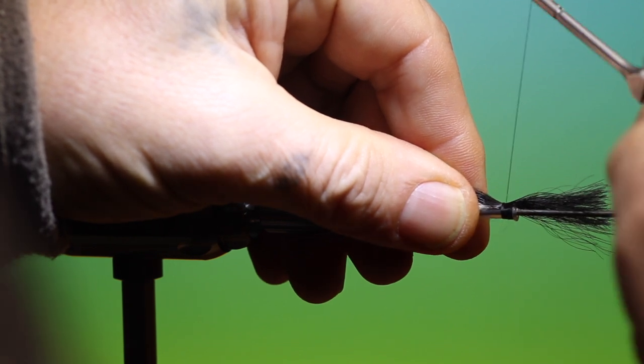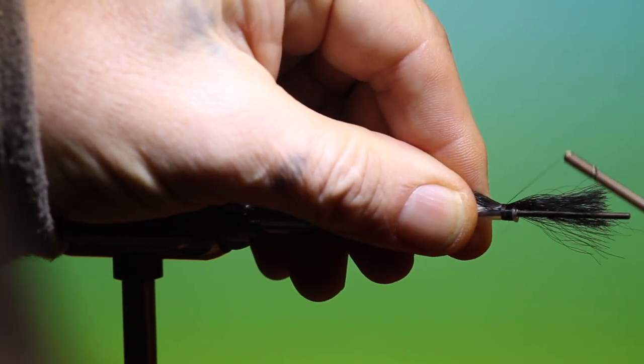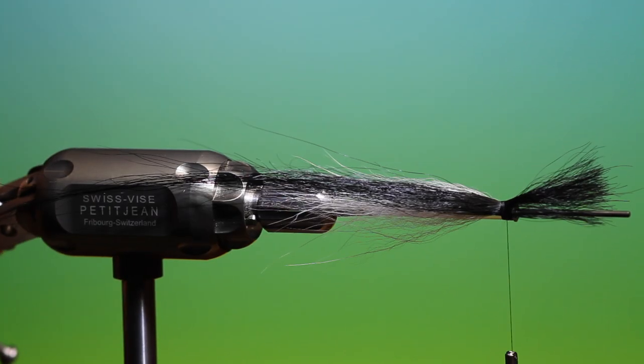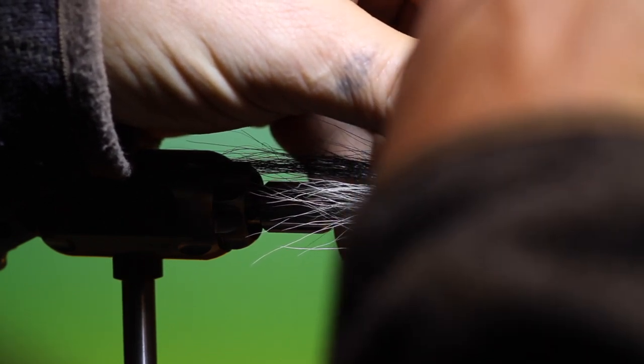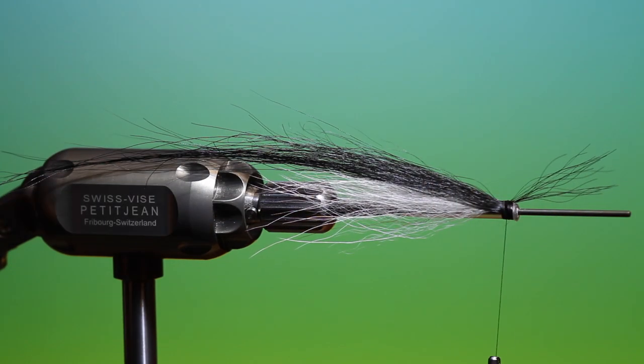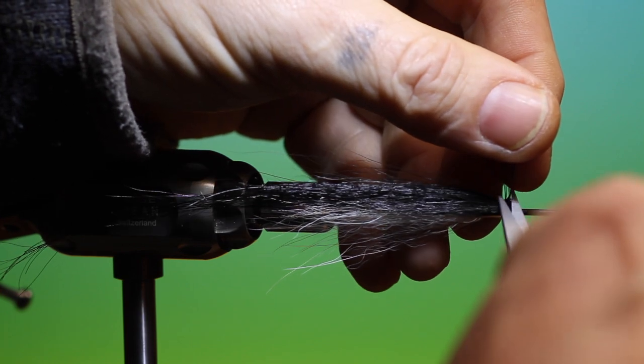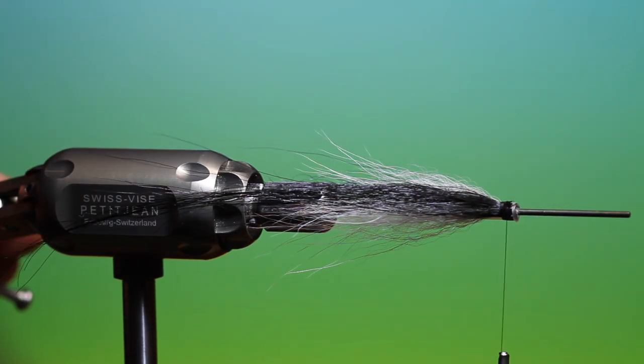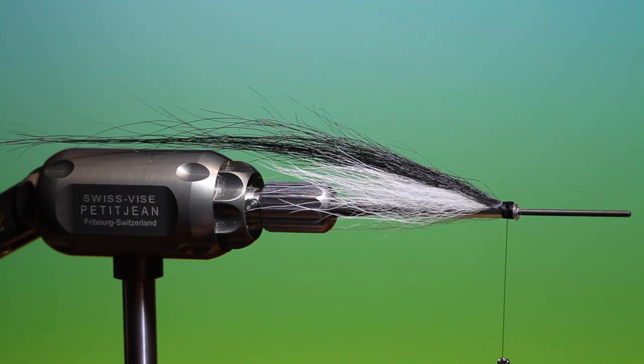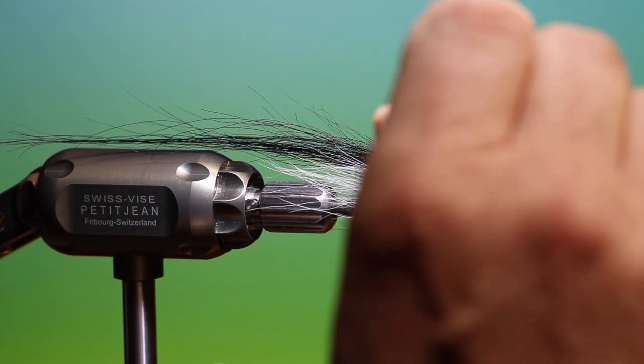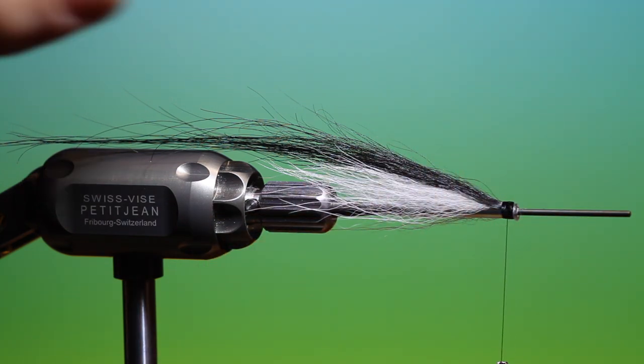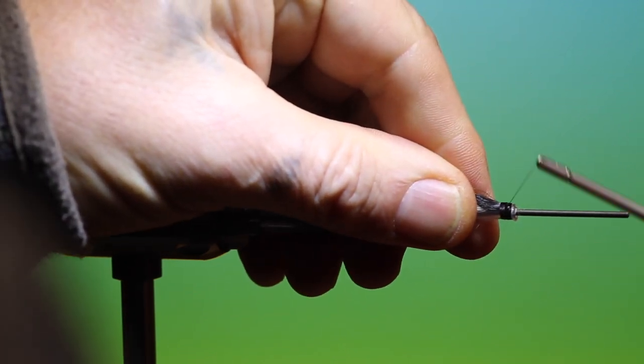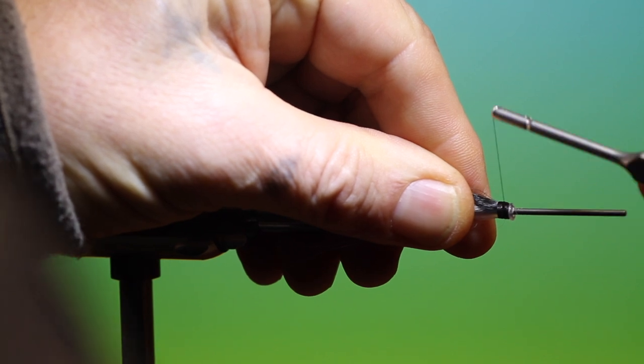That will do nicely there. A little bit of wax. Just stop your thread from slipping. And you can come in again. That's good. I'm going to trim off my goat hair. Come back to our super glue. And drop on top again.